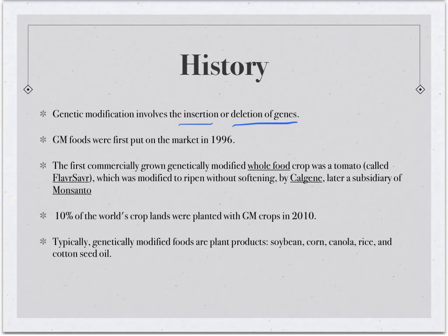These foods were first put on the market in 1996, so they have a very short time frame as far as how long people have been exposed to them. The first genetically grown and modified commercial product was a tomato called the Flavor Saver. It was supposed to ripen without getting soft — a nice hard skin. It was originally developed by a company called Calgene, then later purchased by Monsanto. That crop wasn't very popular; they had to take it off the market. It was genetically modified and supposed to be better, but people ended up not really liking it — it was kind of a commercial flop.